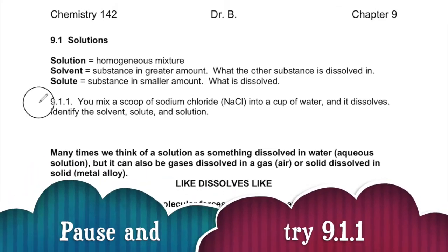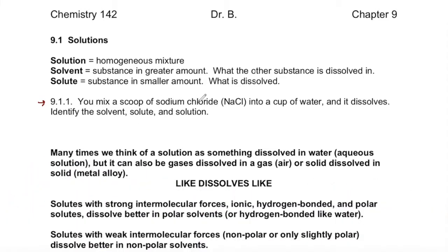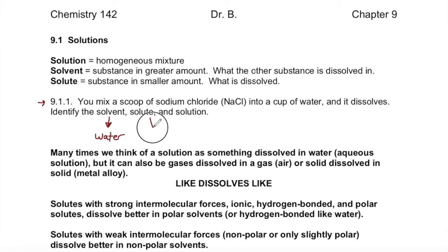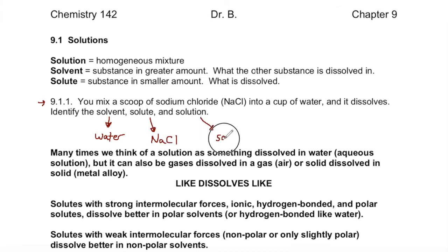Here's an example to make sure we understand that. If you take a small spoonful of sodium chloride — table salt — and put it in a cup of water and mix it, it will dissolve. Since we have more water than salt, the solvent would be water. The solute would be sodium chloride, and the solution would be the mixture we end up with: the salt water.